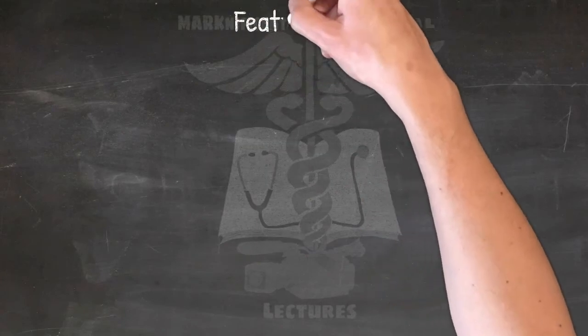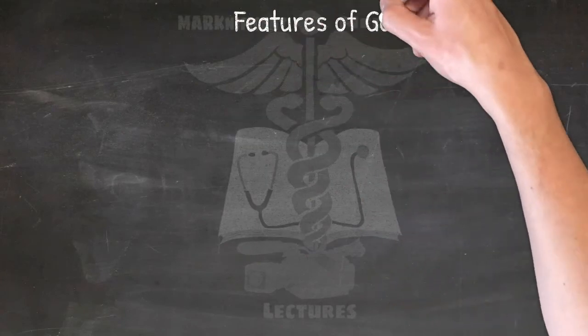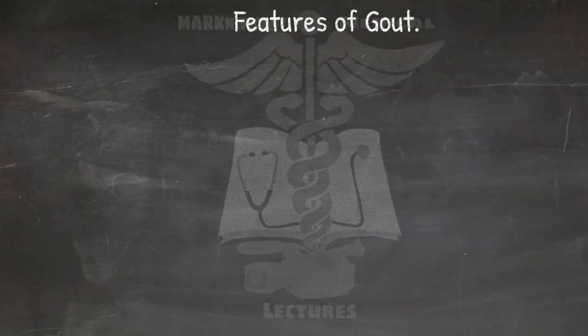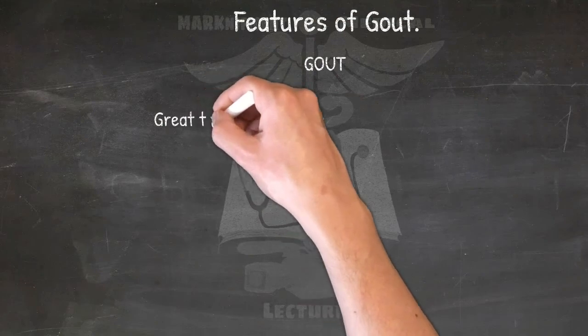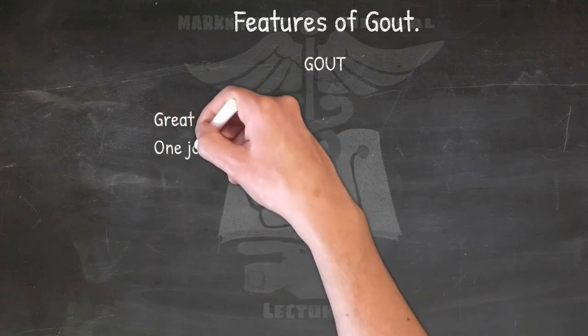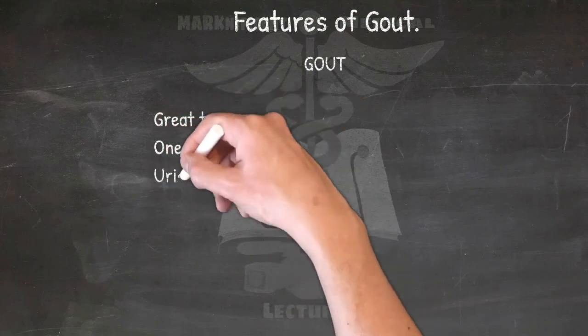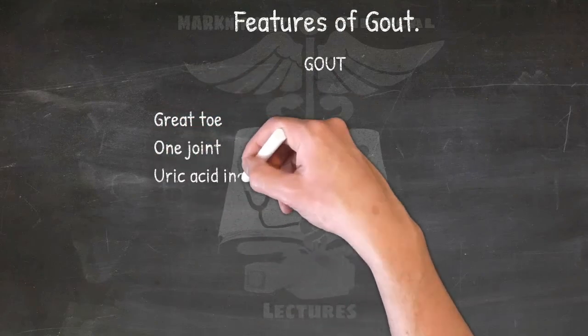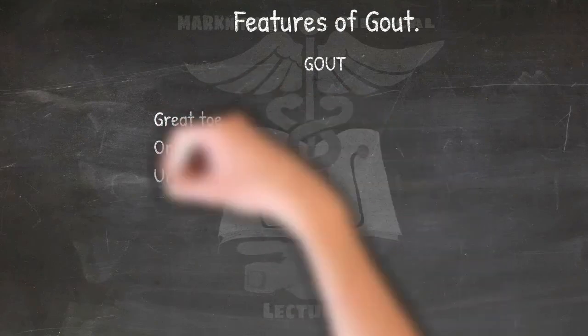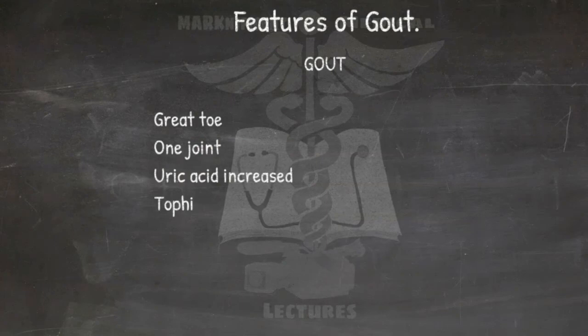Major features of gout: GOUT — Great toe (one joint, 75% monoarticular), Uric acid increased, and Tophi.